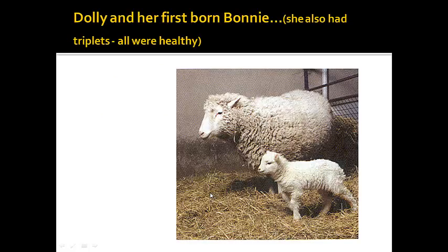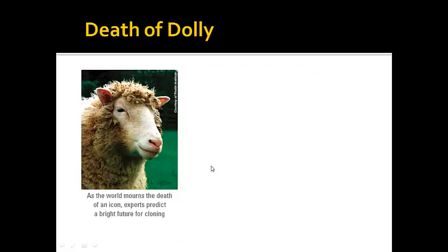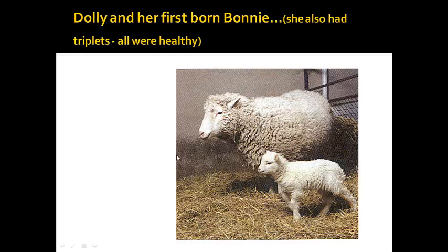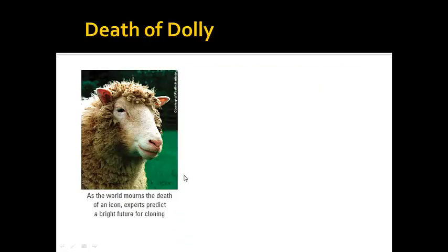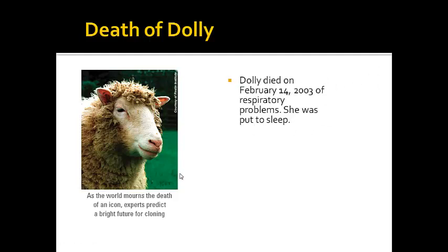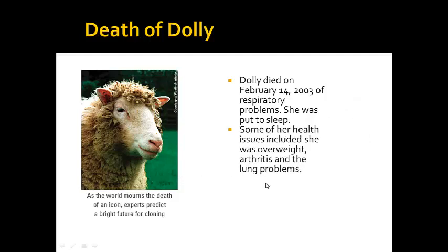Looking at Dolly, you have a lot of questions. How old was Dolly? Is she the age of the original sheep she came from, or is she the age of when she was born? One of the questions they also had was: could Dolly reproduce? And she could. Dolly's firstborn was Bonnie, and she actually had triplets during her life, which is rare for sheep. Dolly did have some abnormalities. She died on February 14, 2003, of severe respiratory problems — she was euthanized because she was so unhealthy. Her health issues included being overweight, arthritis, and lung problems. Most sheep like Dolly live to 11 or 12, but she was only six and a half years old when she died.